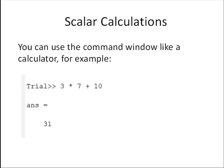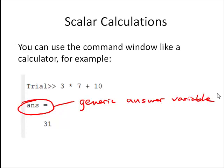Let's start by talking about scalar calculations. So we can use the command window like a calculator. For example, here we just entered 3 times 7 plus 10, and the answer is 31. You'll notice the output shows this ANS. That's actually a generic answer variable that MATLAB creates when we don't use a variable on the left side, when we don't assign the output of a MATLAB command to a variable.